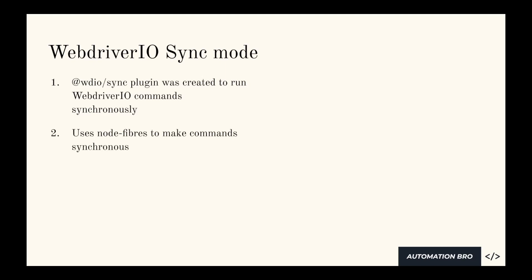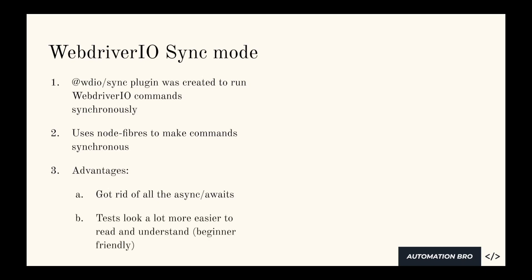The way this works is it uses Node Fibers to make those commands synchronous. You don't need to be familiar with what Node Fibers is — essentially, what it's trying to do is resolve each and every command on its own so that you don't have to use async/await. So what are the advantages of this? Like I mentioned, it got rid of all the async awaits — adding an async function, awaiting the element, and then awaiting again and clicking on it. It got rid of all of that, and because of that, our tests are looking a lot more easier to read and understand. That was one of the main reasons WebDriverIO got so popular, because it was extremely beginner friendly.